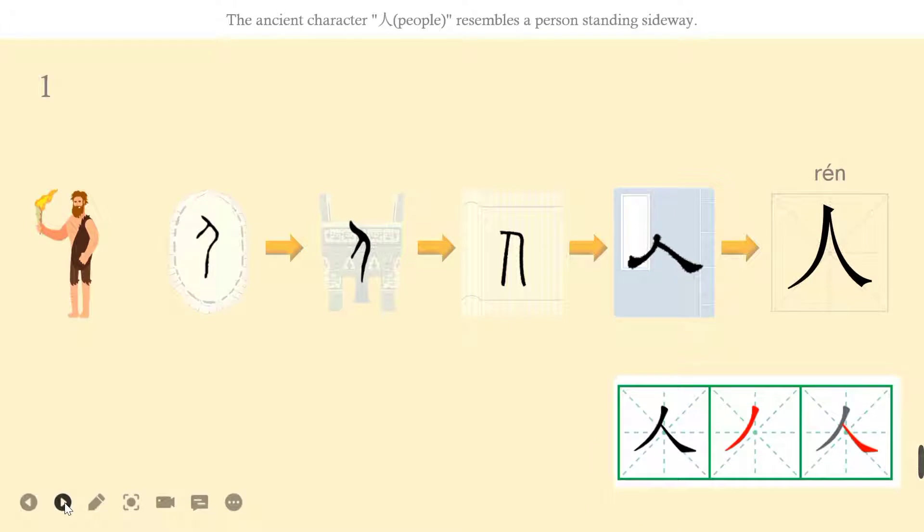Let's see how to write. Rén has two strokes. The first stroke: piě. The second stroke: nà.